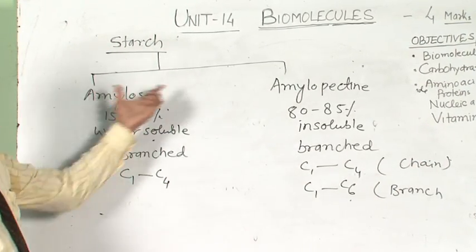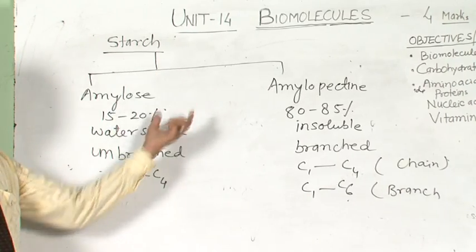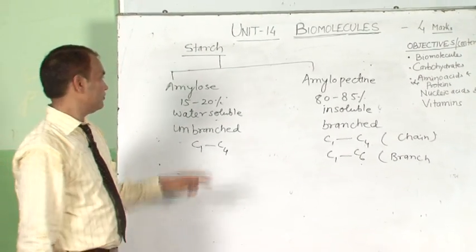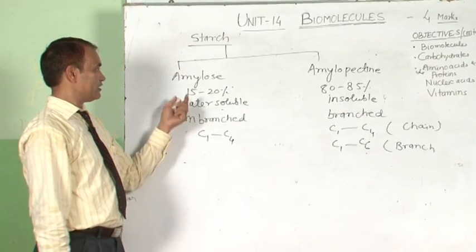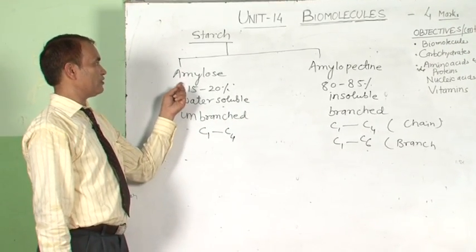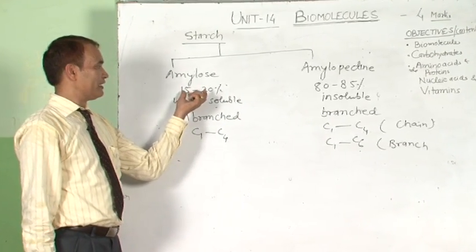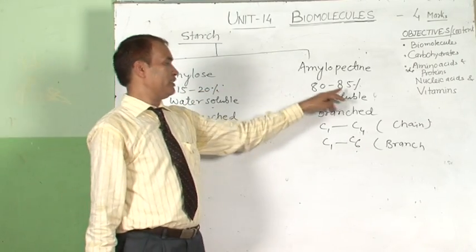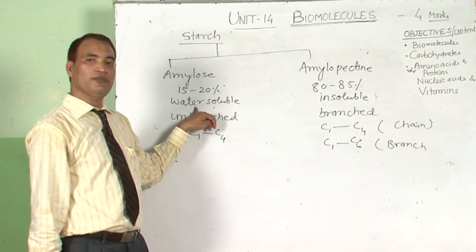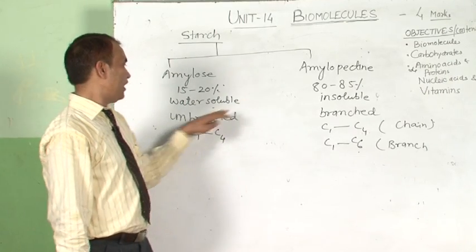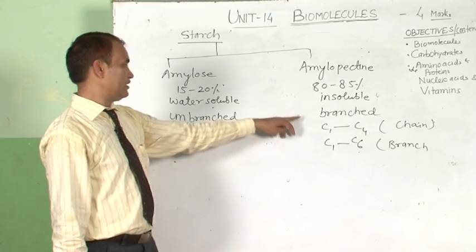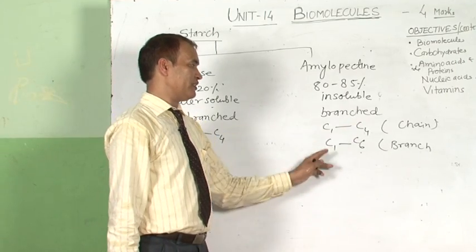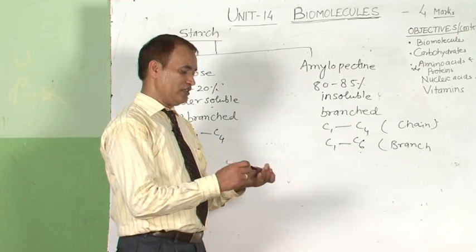A common exam question asks about the differences between amylose and amylopectin. Amylose is 15–20% of starch; amylopectin is 80–85%. Amylose is water soluble; amylopectin is water insoluble. Amylose is unbranched with C1–C4 linkage; amylopectin is branched with C1–C4 linkage in the chain and C1–C6 linkage in the branching.